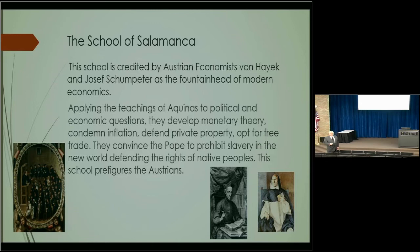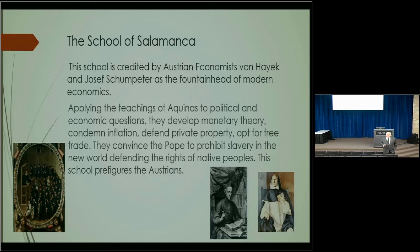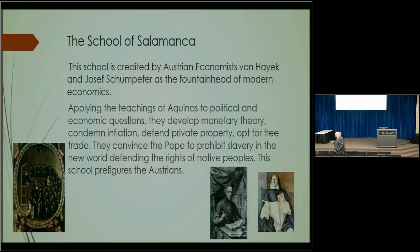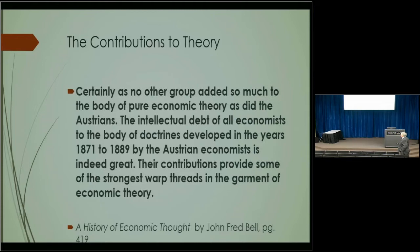The School of Salamanca was credited by the Austrians as the foundation of their school. They applied Saint Thomas's thought to economic and political questions. They convinced the Pope to issue an encyclical in 1506 prohibiting slavery in the New World — the punishment for involvement in the slave trade was excommunication from the Church, which at that time was a very serious matter. Most of the theory you study in microeconomics and monetary theory comes back to the Austrians.